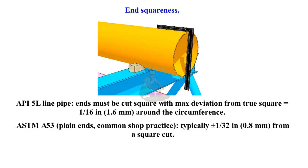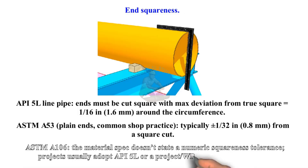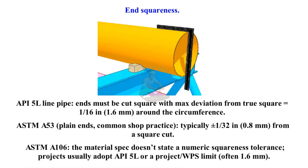ASTM A53 plain ends, common shop practice: typically plus or minus 1/32 inch (0.8 millimetres) from a square cut. ASTM A106: the material specification does not state a numeric squareness tolerance. Projects usually adopt API 5L or a project and WPS limit, often 1.6 millimetres.